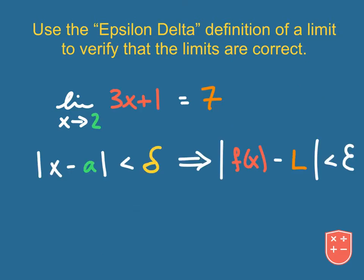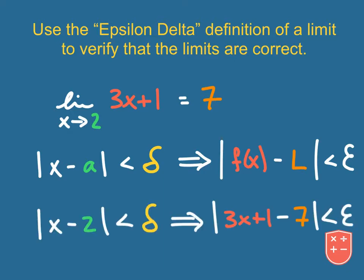Now, these are all the important parts of our epsilon-delta definition. Notice that I've color-coded these so that x minus a — your a value is 2, your function is 3x plus 1, and your limit value is 7. The only thing we don't know is delta and epsilon, and that's okay because we can figure that out from this information. As we approach 2 on our x value, we're going to be within a certain value — within delta — and that leads us to saying that the function value or limit value will be somewhere within epsilon.